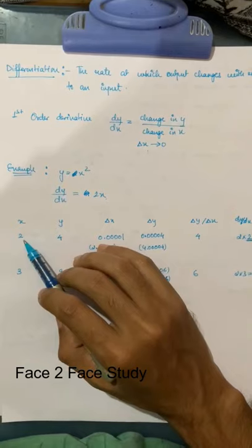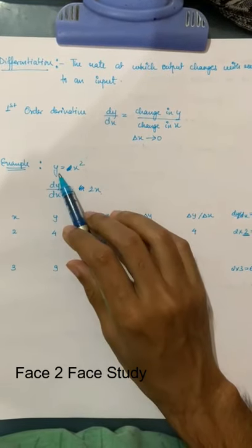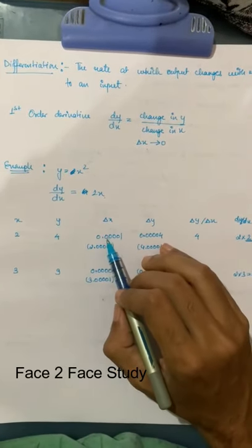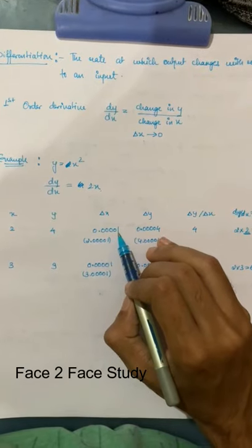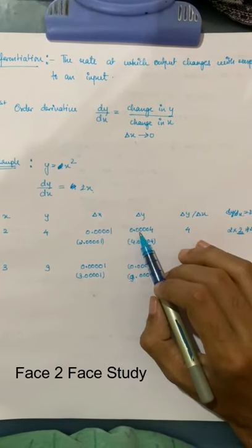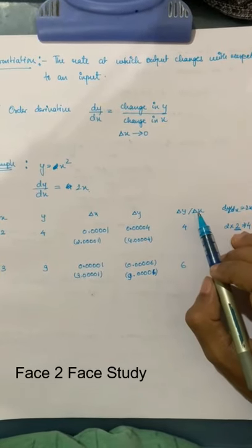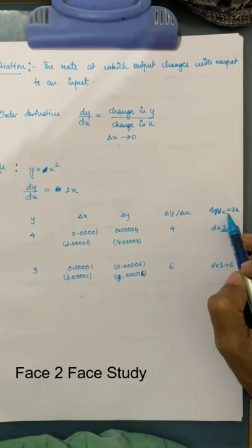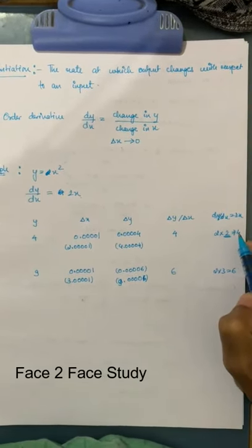Now, if x = 2, we get y from the function y = x². If we give a change in x equal to 0.001, we get a change in y equal to 0.004. The ratio of change in y with respect to change in x is 4. If we use differentiation, we get 2x, and putting x = 2 gives us 4.